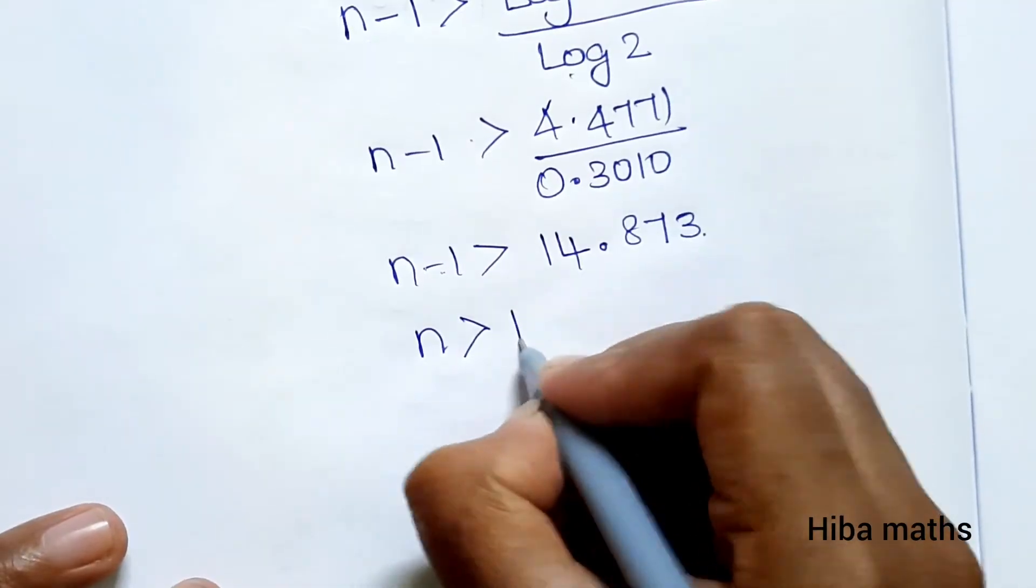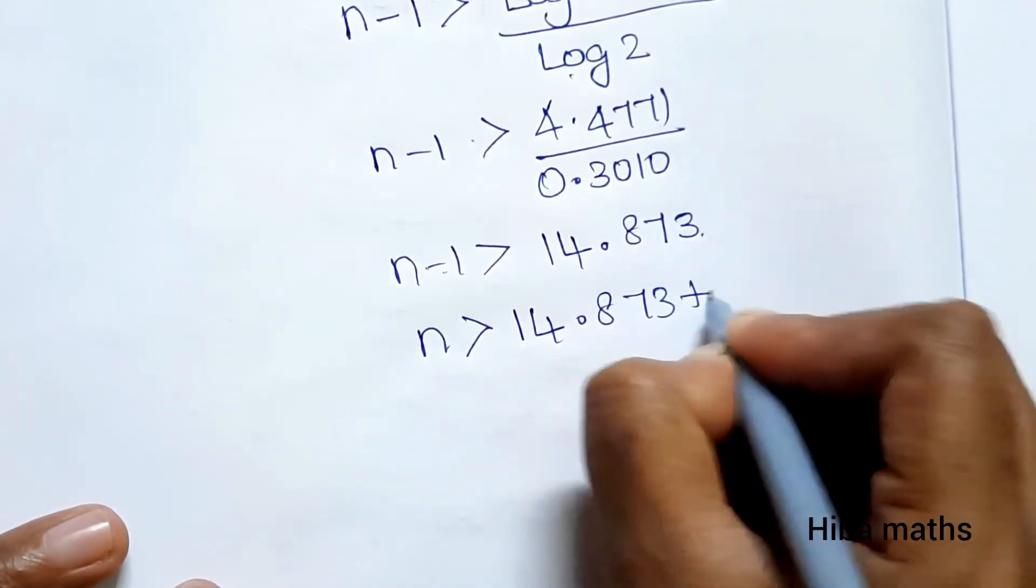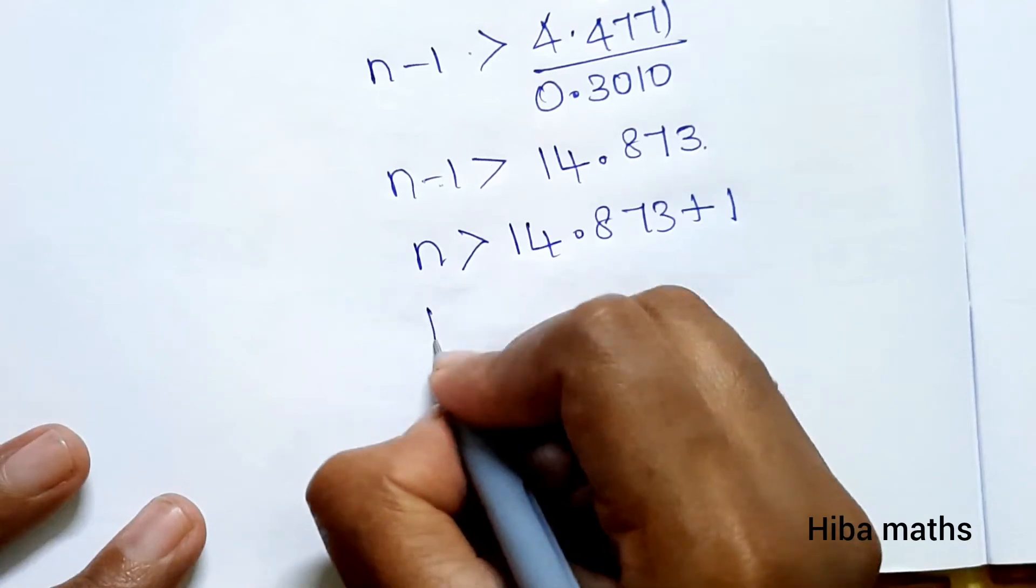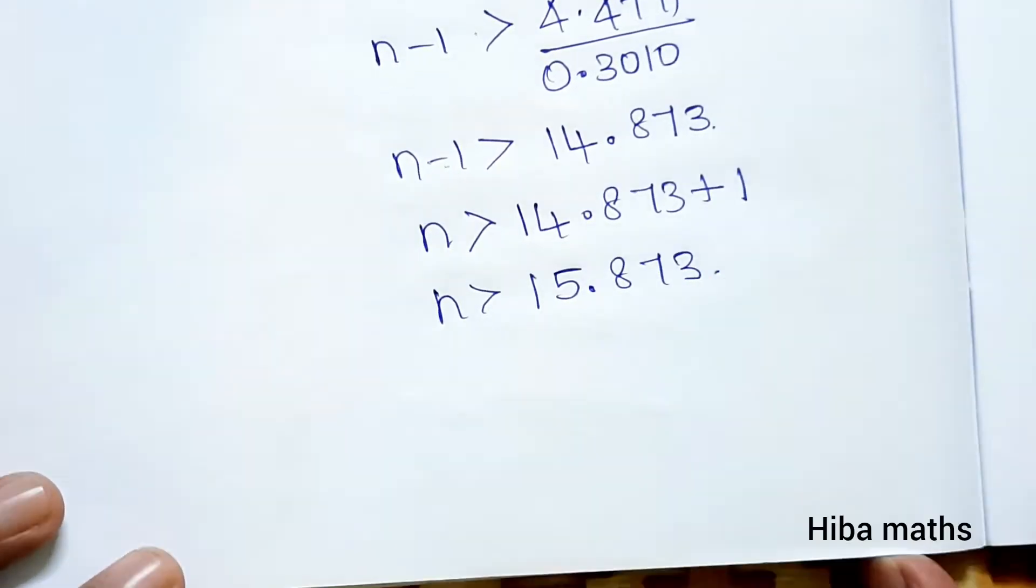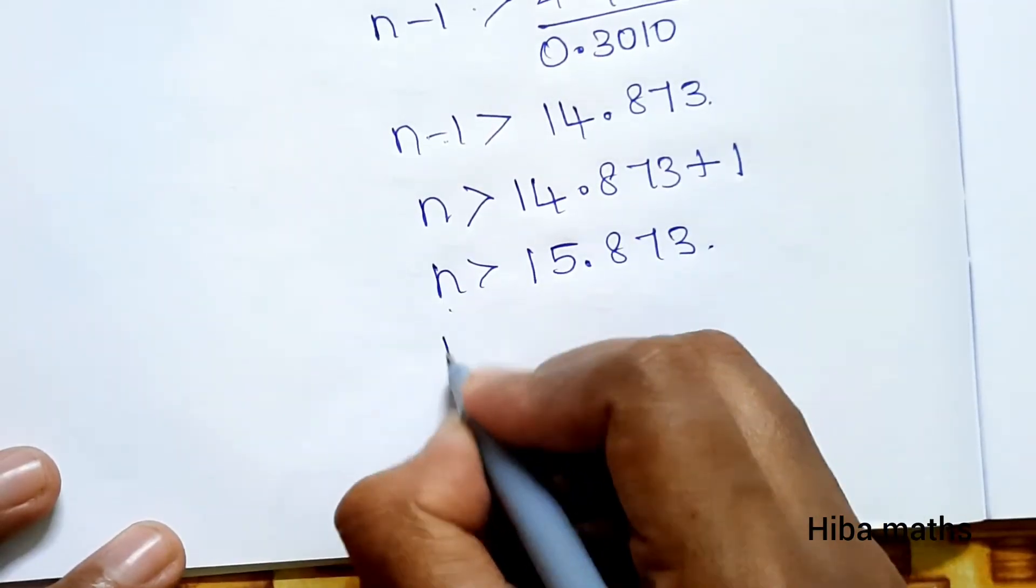n-1 is greater than 14.873, so n is greater than 15.873. Therefore, n equals 16.